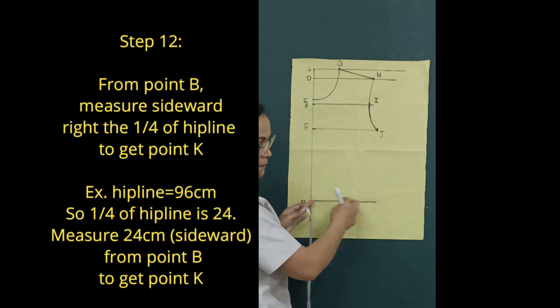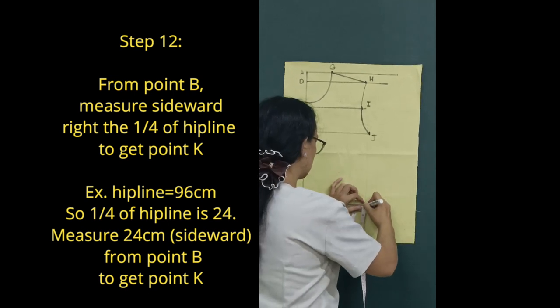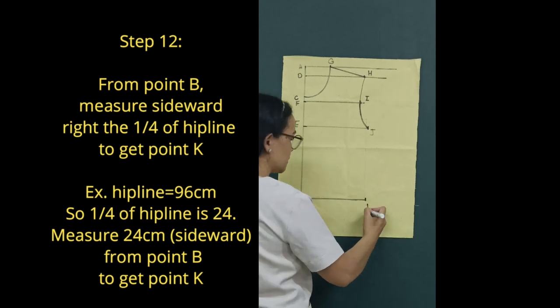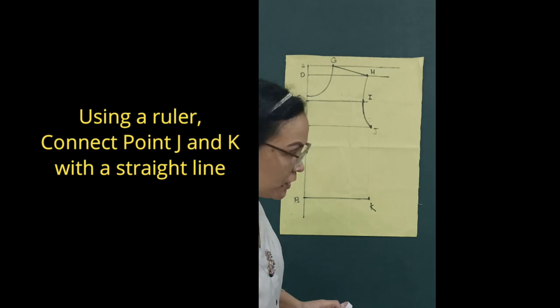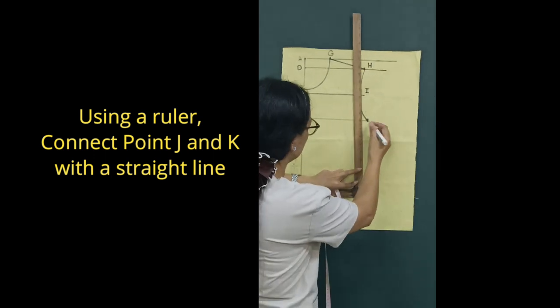Step 12: From point B, measure sideward right the 1/4 of hip line to get point K. Using a ruler, connect point J and K with a straight line.